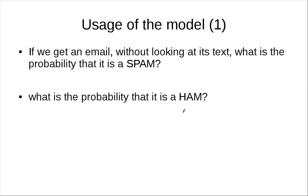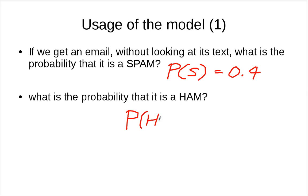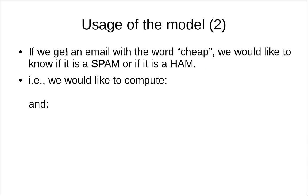With this simple model, we can talk about probabilities of various events. If you get an email without looking at its text, the probability that it is spam is P(S) = 0.4, and the probability that it is ham is P(H) = 1 - P(S) = 0.6. More interestingly: if we get an email and we see the word cheap in it, we'd like to know if it is spam or ham.